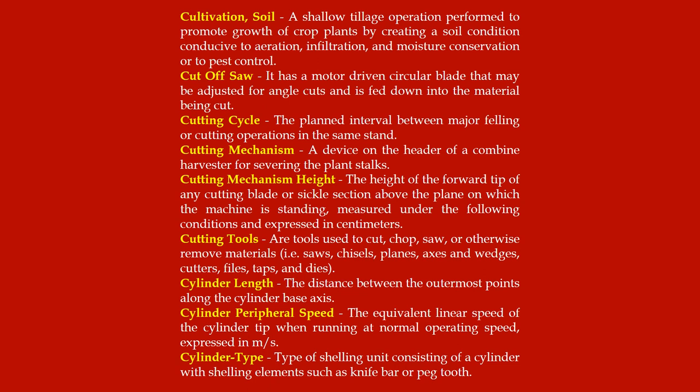Cutting tools: tools used to cut, chop, saw or otherwise remove materials; examples include saws, chisels, planes, axes and wedges, cutters, files, taps and dies. Cylinder length: the distance between the outermost points along the cylinder base axis. Cylinder peripheral speed: the equivalent linear speed of the cylinder tip when running at normal operating speed, expressed in meters per second. Cylinder type: type of shelling unit consisting of a cylinder with shelling elements such as knife bar or peg tooth.